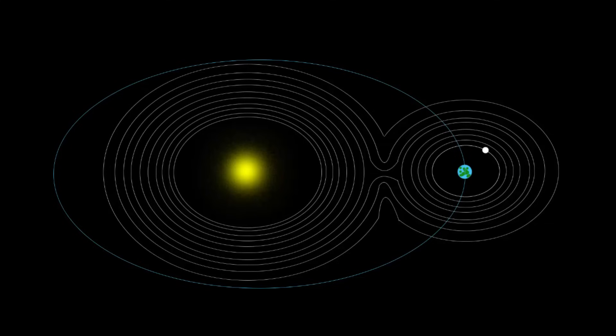There are 5 Lagrange points in the Earth-Sun system and they are labeled L1, L2, L3, L4 and L5. As you can see, L1 is located right between the Earth and the Sun. L2 is on the opposite side of the Earth from the Sun. L3 is on the opposite side of the Sun from the Earth.